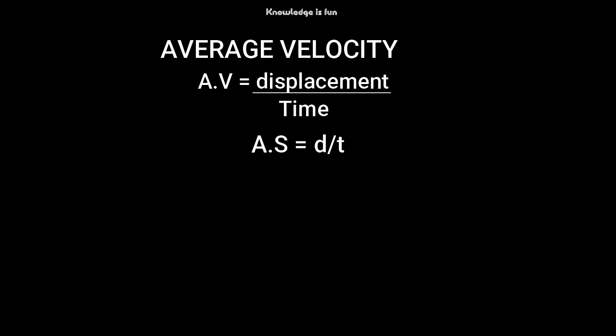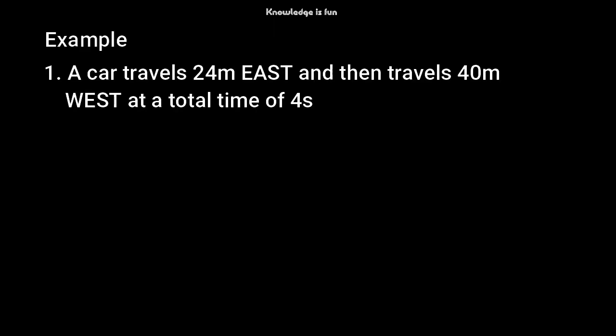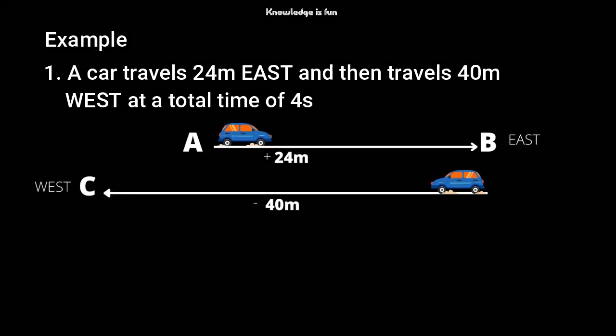Let's explain this concept with an example. A car travels 24 meters east and then travels 40 meters west. The eastward direction is positive, so that's positive 24 meters to the east. Then the car travels back, and since it's returning, that direction is negative — so negative 40 meters. The total time taken is four seconds.